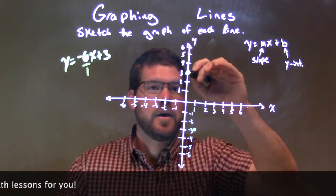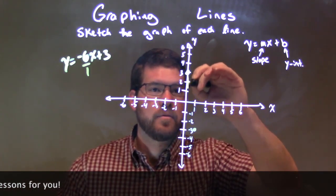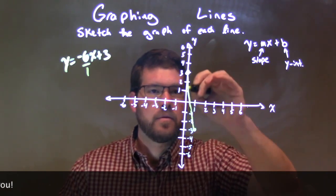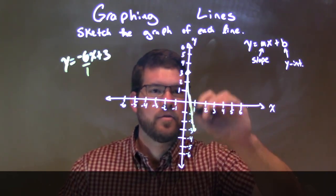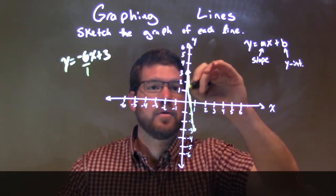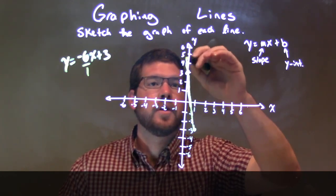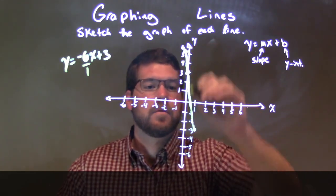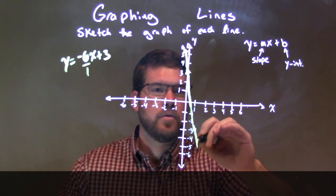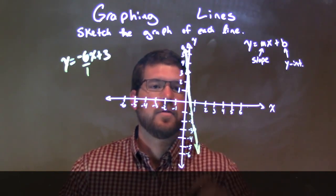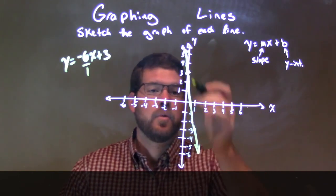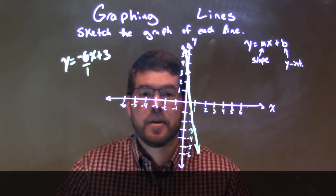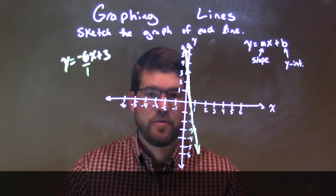We can connect these two points. There we go — I'm trying to get straight, freehand — not too bad. You get the gist of it. There we have it — we have our two points that make a line. Now we have our graph for the equation y equals negative 6x plus 3.